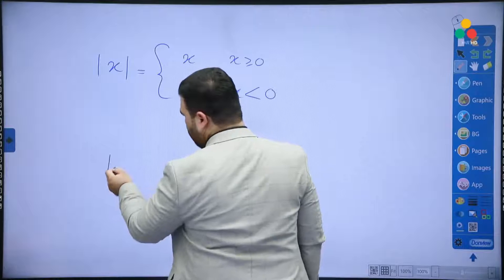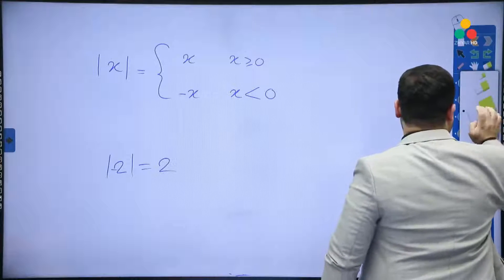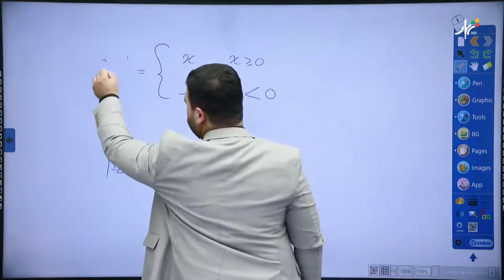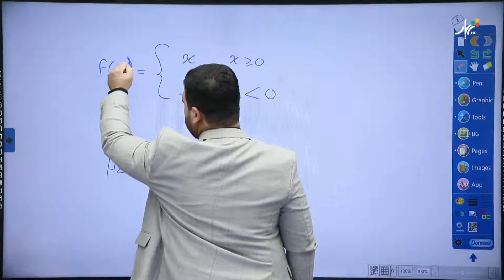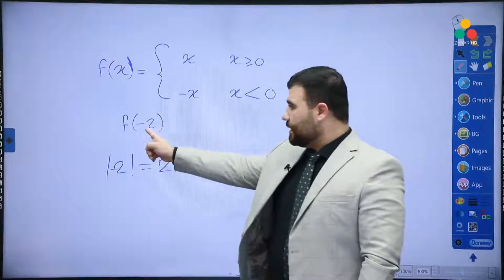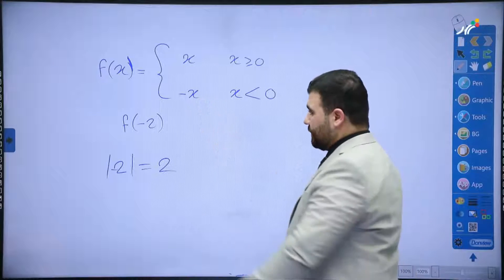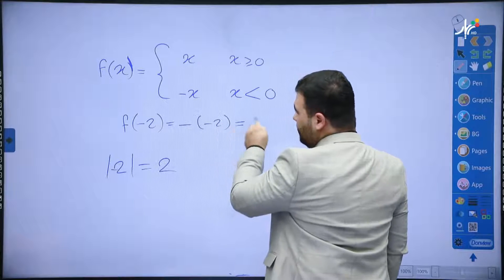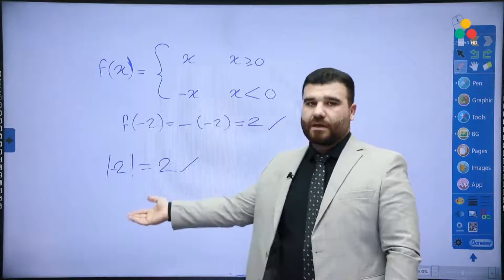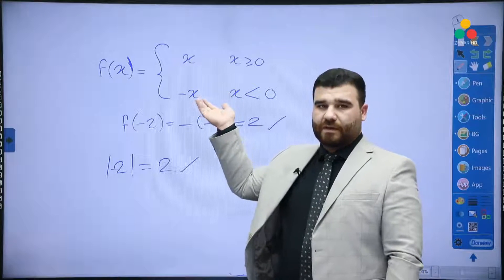For example, |(-2)| = 2. Using the piecewise function, since -2 < 0 we use the -x piece: -(-2) = 2. The result is the same, so this piecewise function does the same job as absolute value. Since they are equal, I can write this piecewise in place of |x| whenever needed.